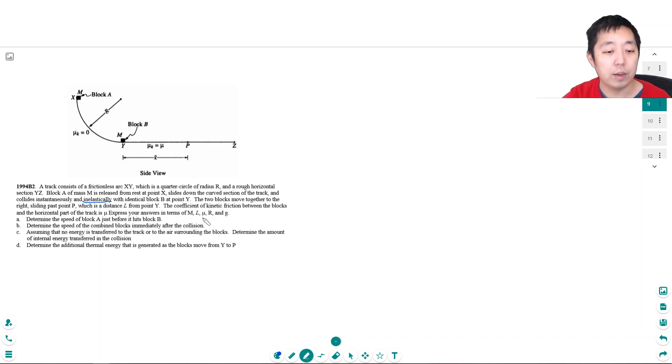Express your answers in terms of m, l, mu, r, and g. Determine the speed of block a just before it hits block b. So this block I let go it slides down with no friction.